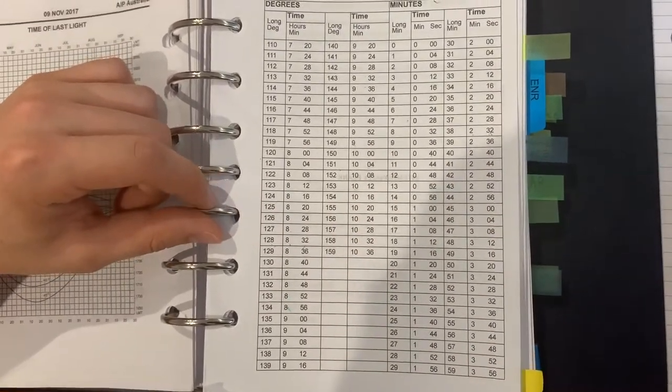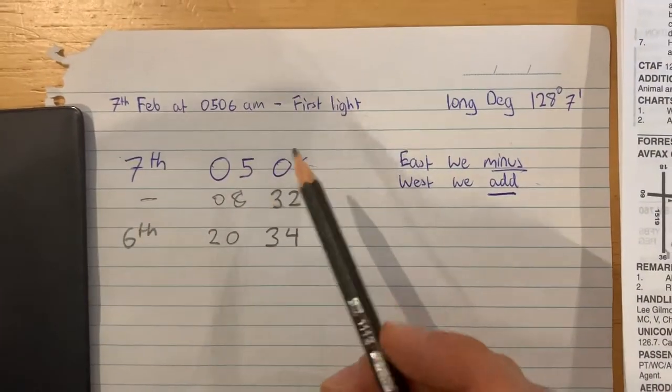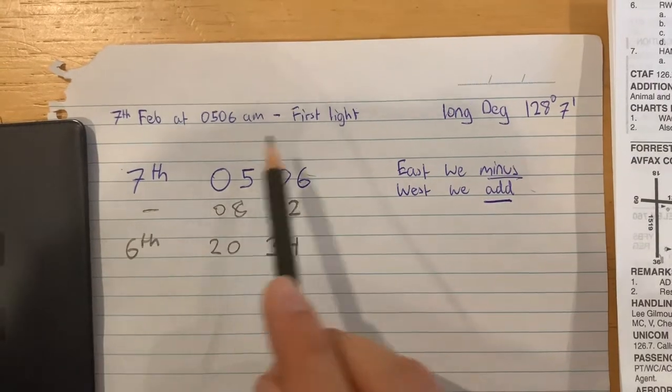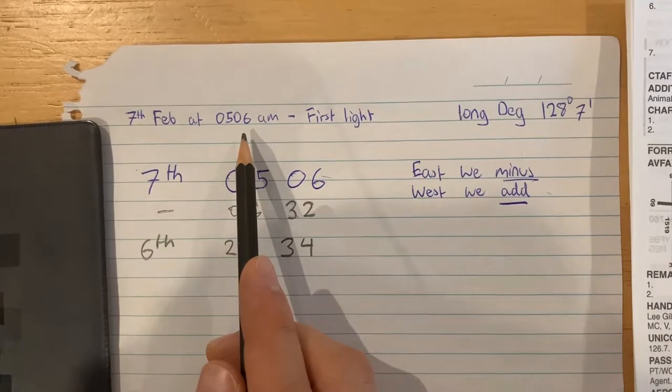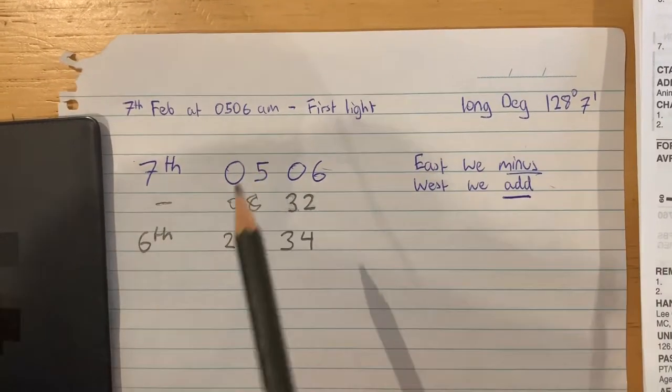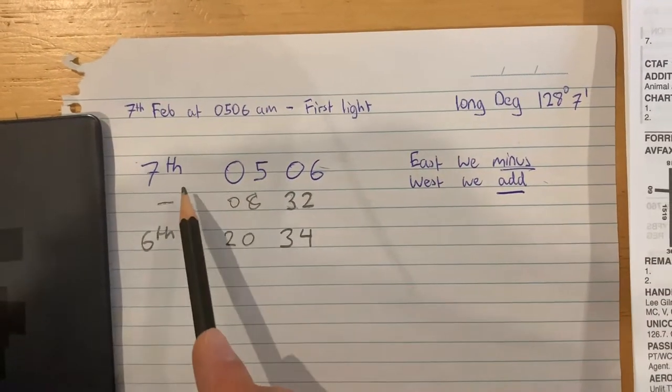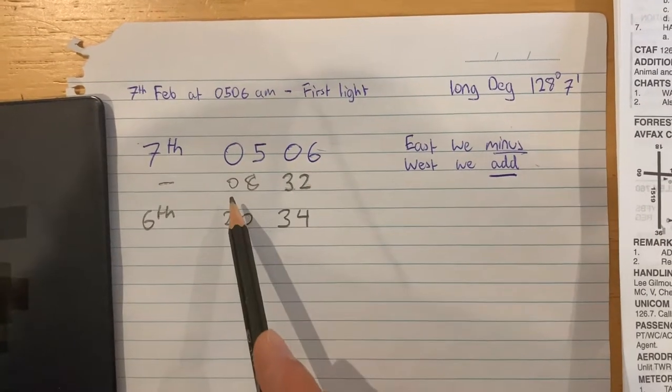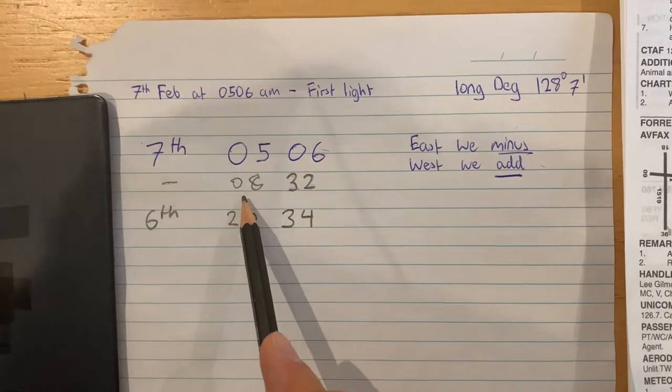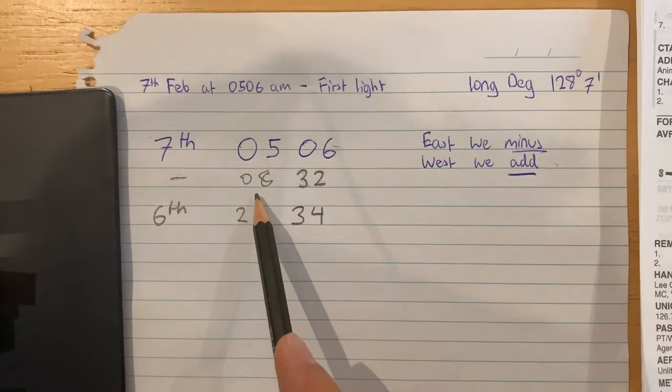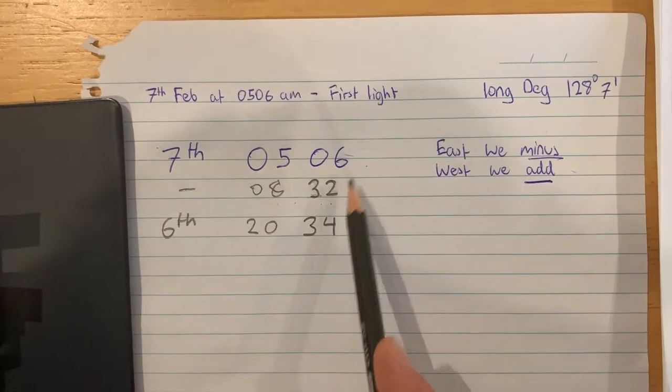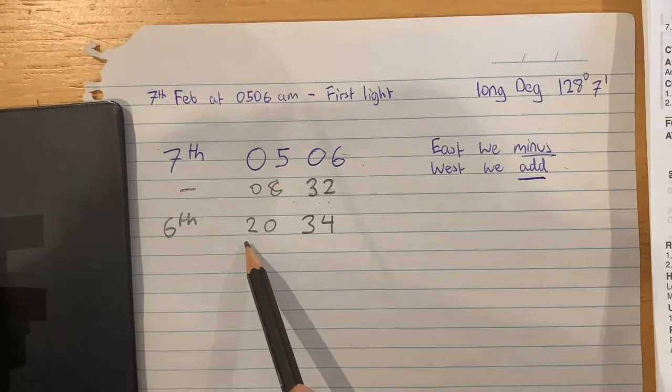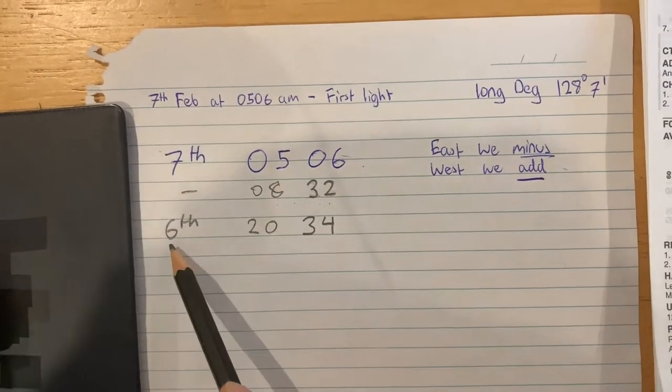The local mean time on the 7th of February at the aerodrome is 5:06 am, which we got from the previous part. We know that it is at 5:06 and for simplicity, we will subtract 8 hours and 32 minutes from the local mean time, which gives us 20:34 on the 6th.